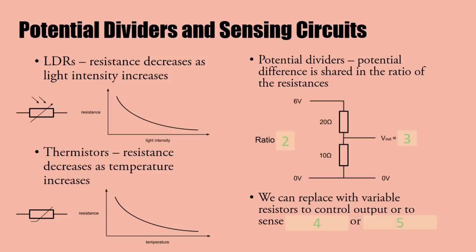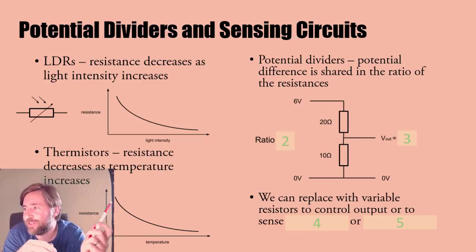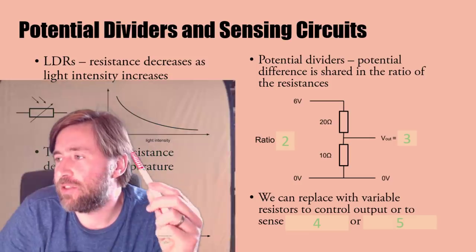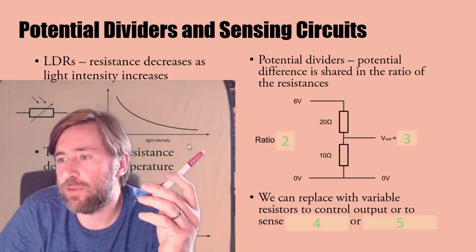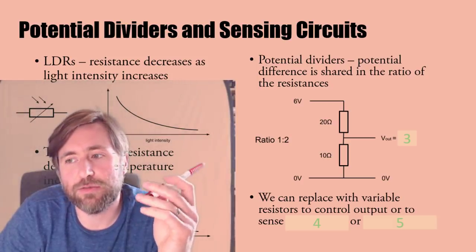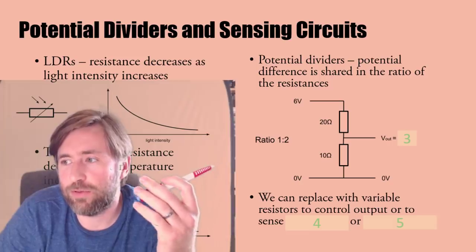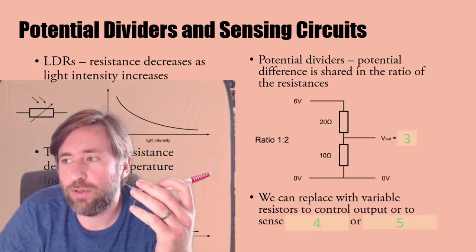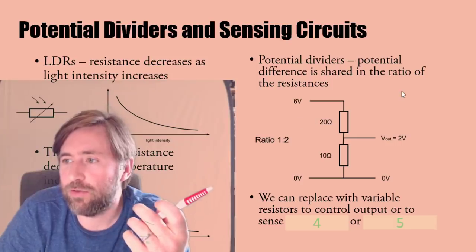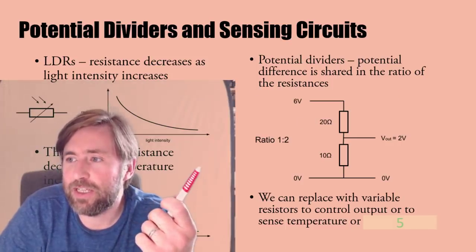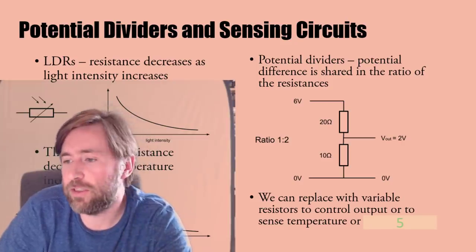Potential dividers - it's not as tricky as it makes out. It's just sharing out the potential difference, in this case six volts, between the top and bottom in the ratio of the resistances. The ratio of these two resistances is one to two, 10 to 20. Therefore there's one part over the bottom one which is two volts, and two parts over the top one which is the remaining four volts.